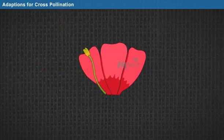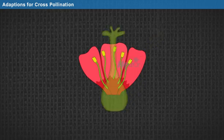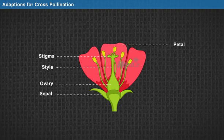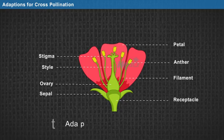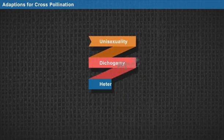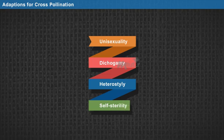Adaptations for cross-pollination: the structure of a flower determines the type of pollination. In certain flowers, the parts are arranged in such a way that permits cross-pollination. Some of the adaptations of flowers that favour cross-pollination are: unisexuality, dichogamy, heterostyly, and self-sterility.